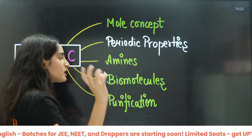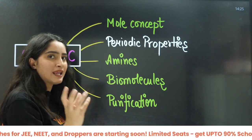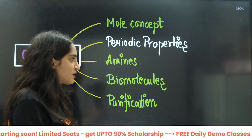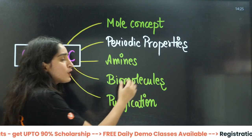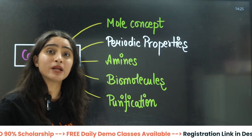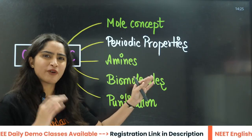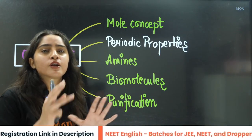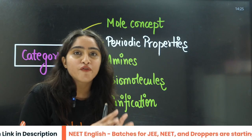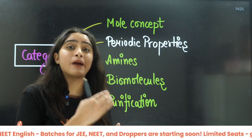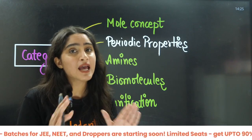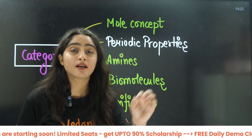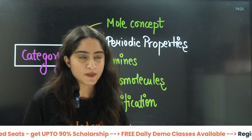Amines is a very small and easy yet important chapter — easy scoring questions come from here. Biomolecules overlaps with biology, so it is also a very scoring chapter. Then you have purification, and some purification concepts will also be applied in experimental chemistry, which you should focus on after completing everything else.